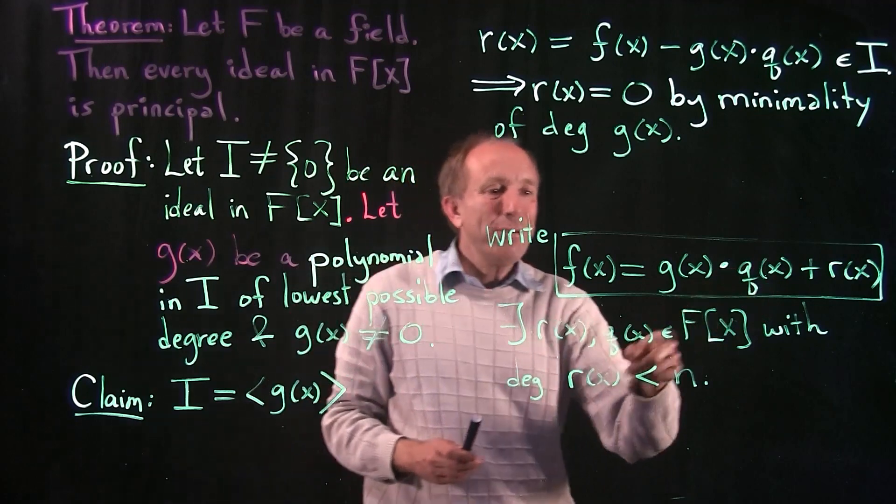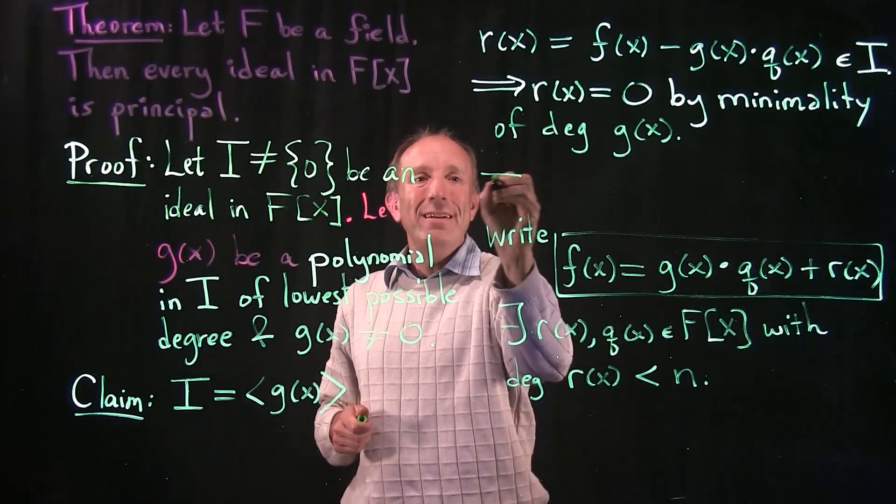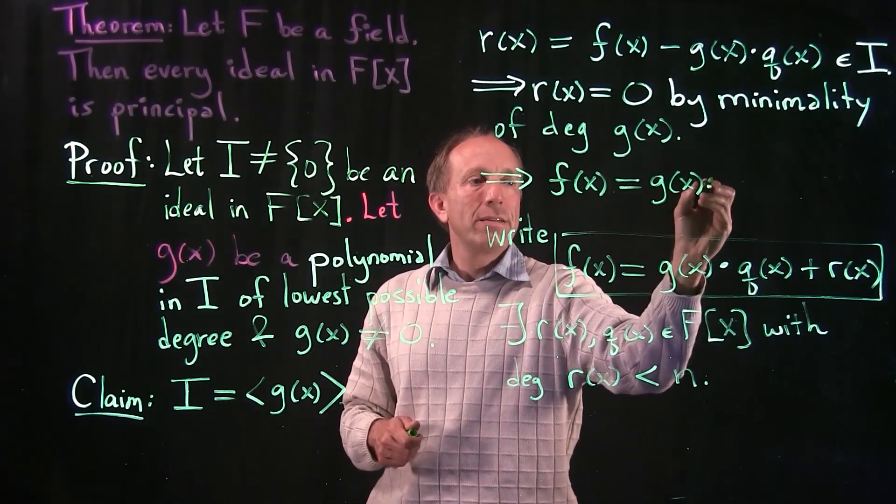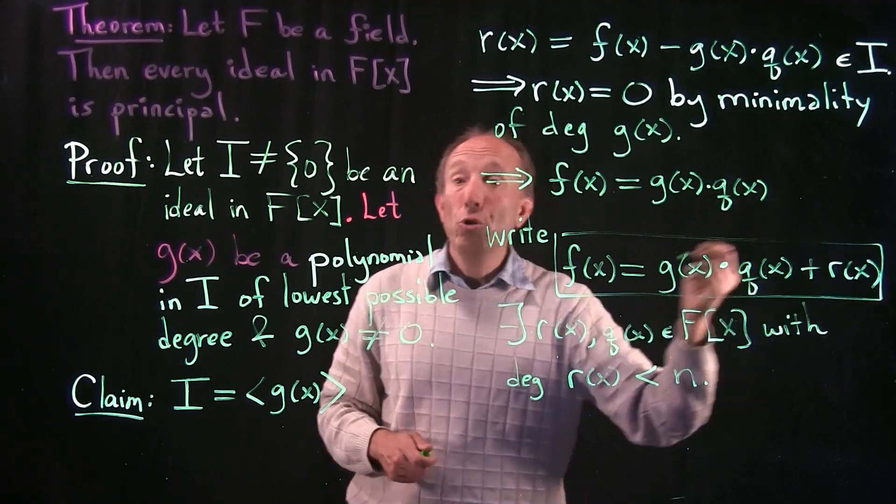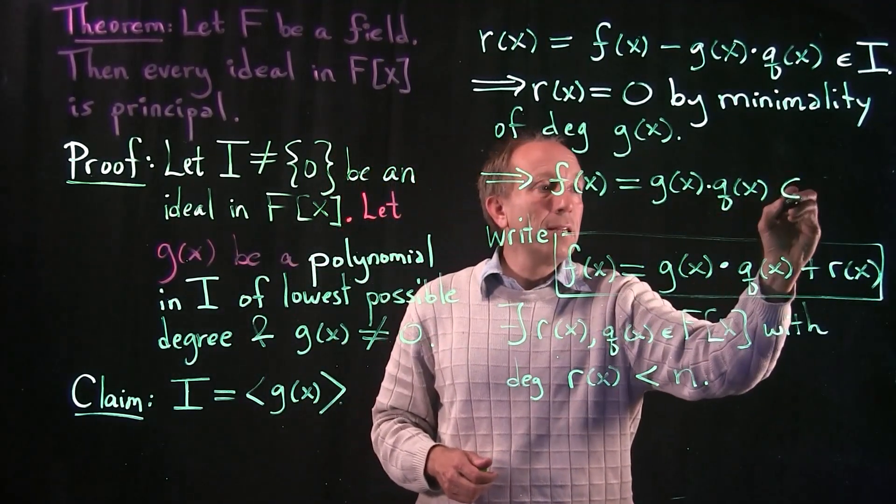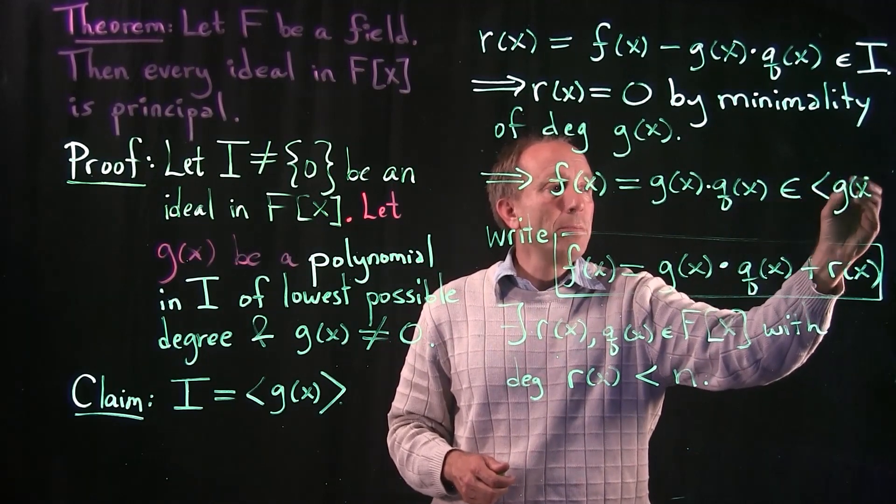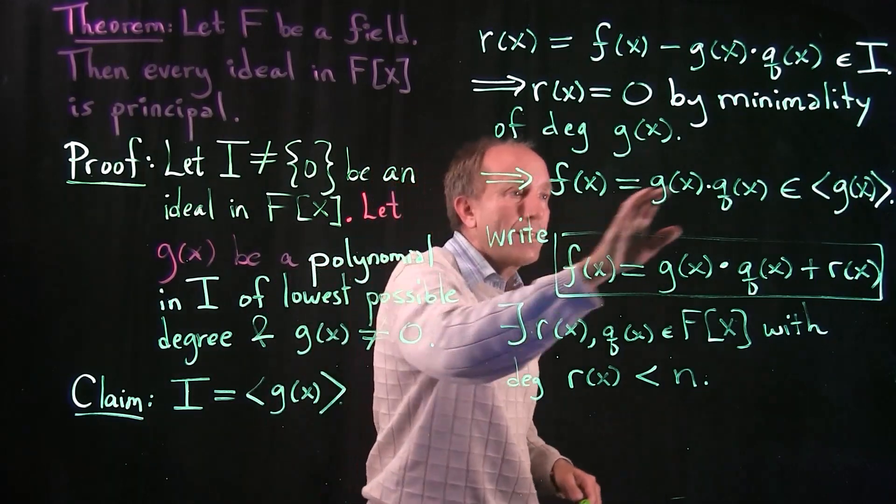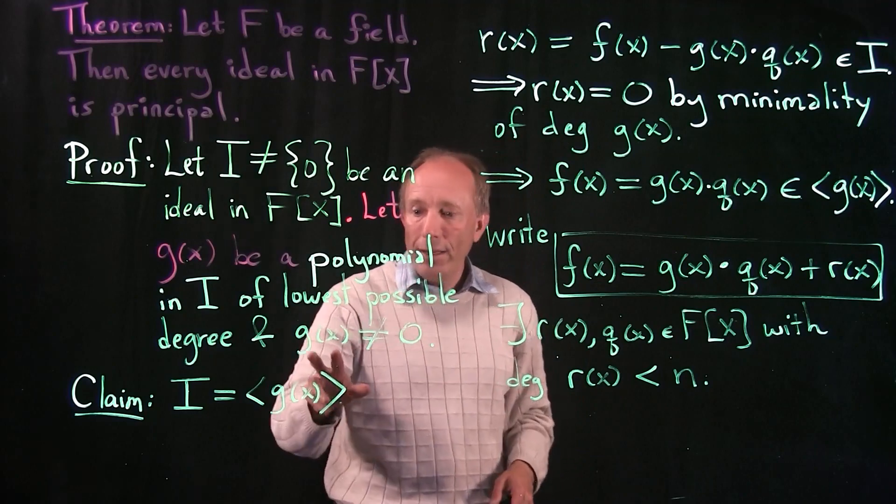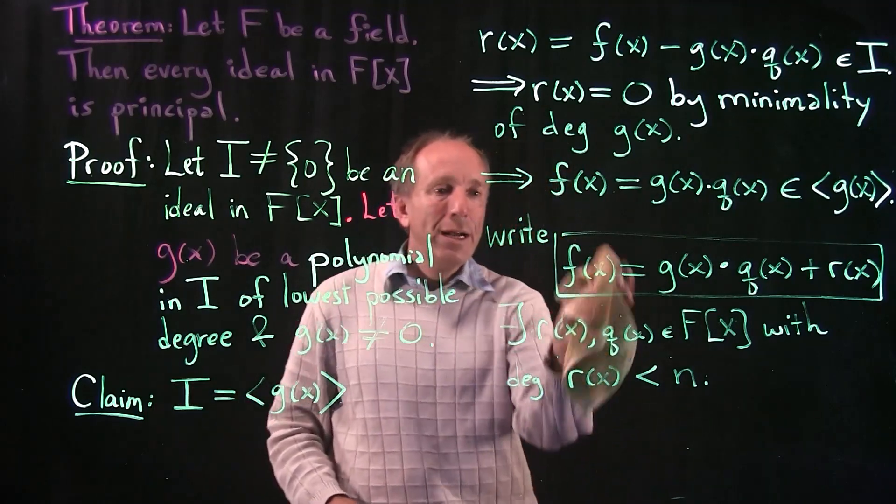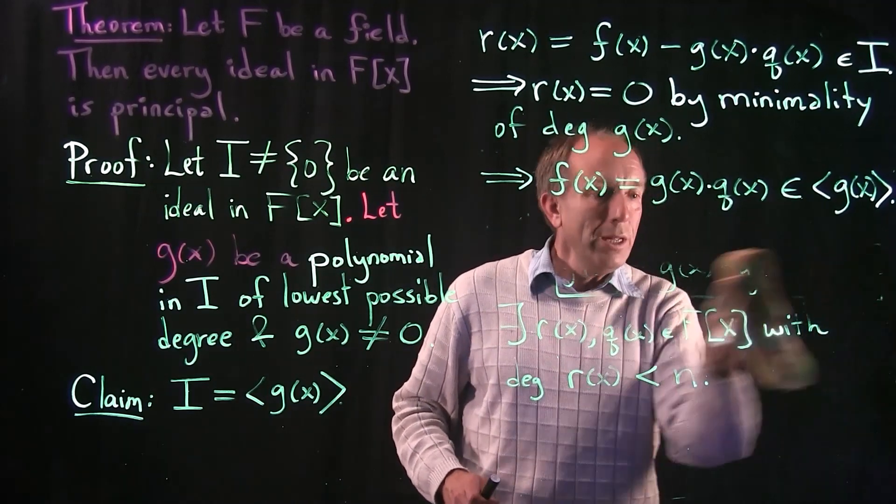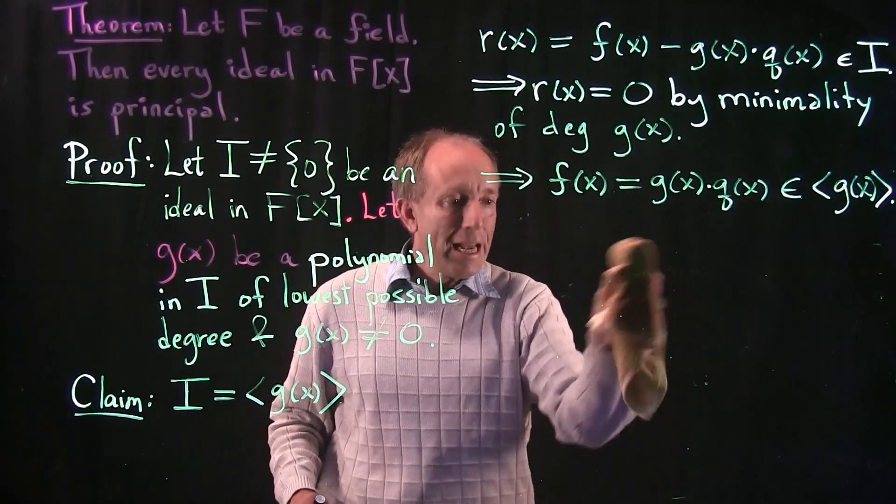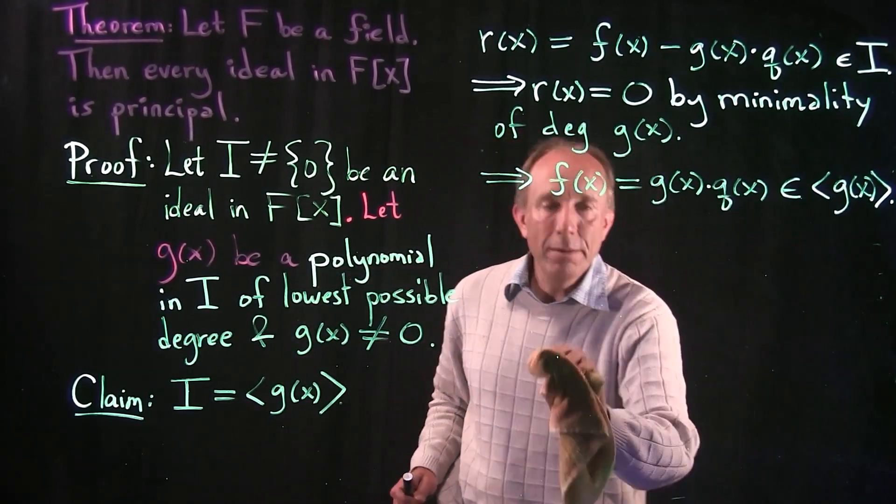Well, if R(x) is equal to zero, then take a look at what we have here. In that case, F(x) is simply G(x) times Q(x). There is no remainder. And now you're looking literally at something that is a multiple of G(x). This means that F(x) is in the principal ideal generated by G(x). And that proves the rest of my claim. So, with that said, we have now finished the proof. Every ideal in capital F[x] must be principal.